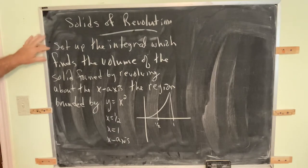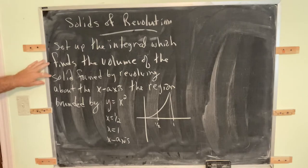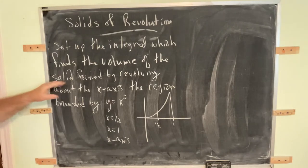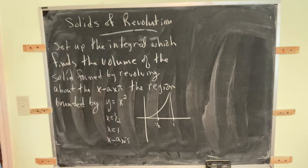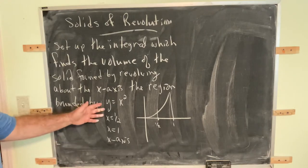Set up the integral which finds the volume of the solid formed by revolving about the x-axis. That piece of information must be given: the region bounded by values that determine this region.